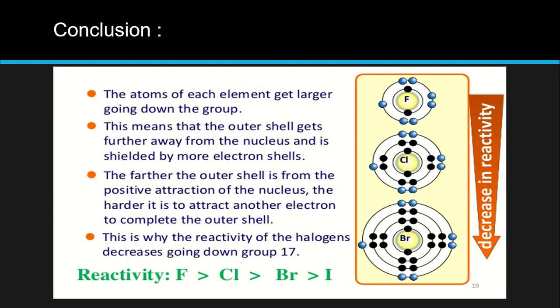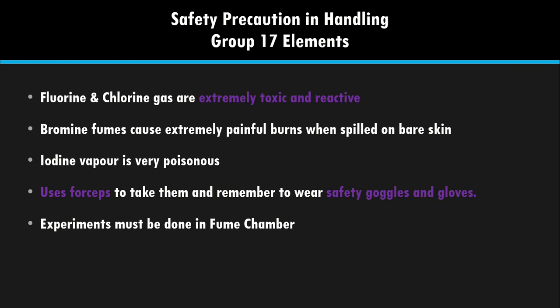Some safety precautions when handling Group 17: fluorine and chlorine are extremely toxic and reactive gases, sangat berbahaya. That's why kita tak boleh guna dia directly. Bromine fume causes extremely painful burns when spilled on the skin. Walaupun dia kurang reactive tapi still berbahaya. Must use faucet to tap, and remember to wear safety goggles and gloves bila buat experiment Group 17. And experiment must be done in fume chamber — dalam kebuk asap — because mereka ni adalah gas, kita tak nak dia release in environment dan kita hidu asap, very dangerous.